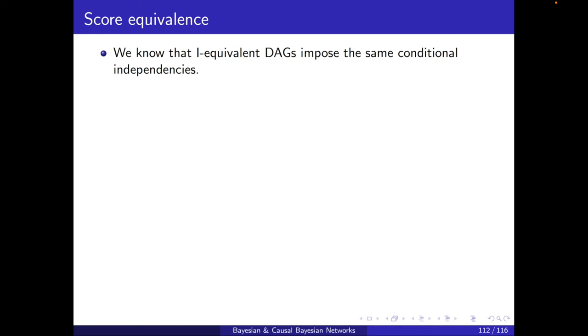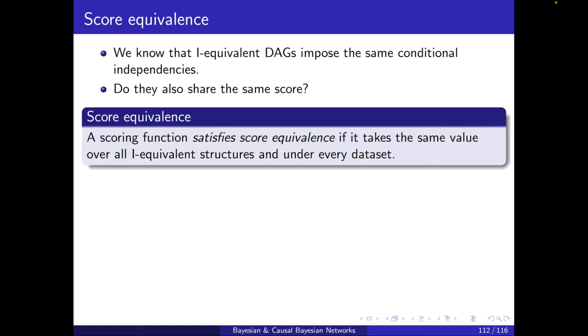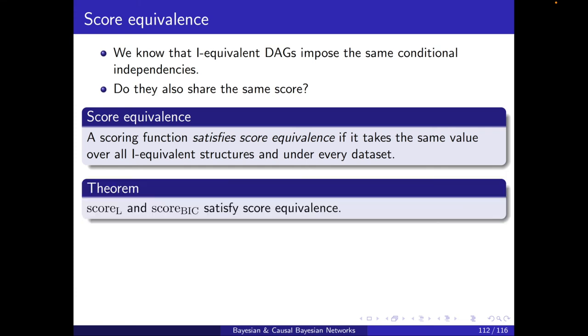Let me move to another useful property. We know that I-equivalent DAGs impose the same conditional independencies. But do they also share the same score? Let's define this as the score equivalence property. A scoring function satisfies score equivalence if it takes the same value over all I-equivalent structures and under every dataset. Theorem: The likelihood score and the BIC score, they satisfy score equivalence. That is great. That is implying that likelihood and BIC under these two, we don't care about the direction of an edge as long as it still falls into the same I-equivalent class.